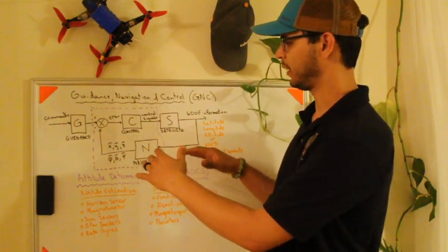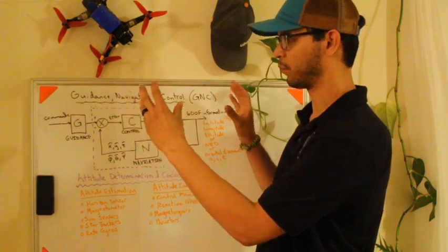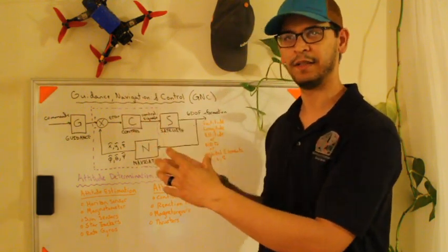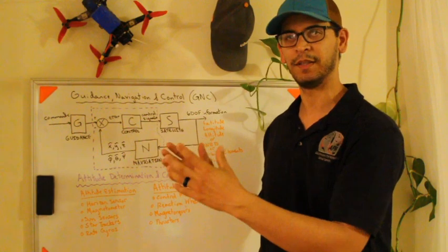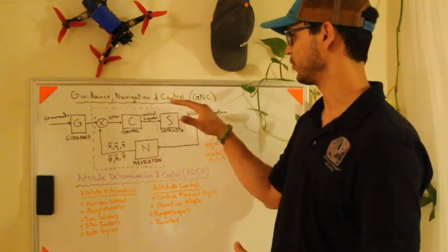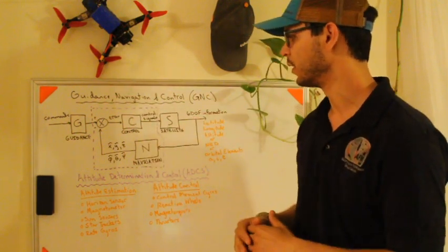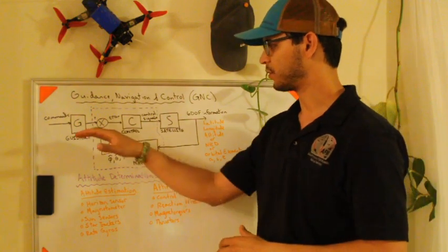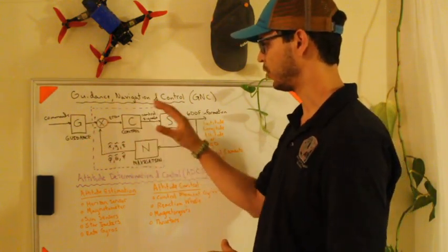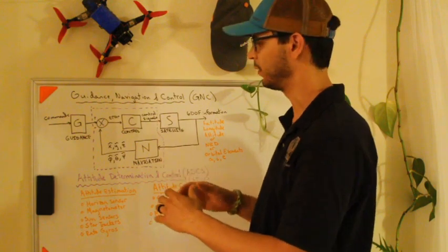Before I get into that, I wanted to talk about the more broader term which is used for larger satellites and just aerospace engineering in general, and that's Guidance Navigation and Control, which is GNC for short. I drew this control block diagram here that kind of shows all the different piece parts of this.